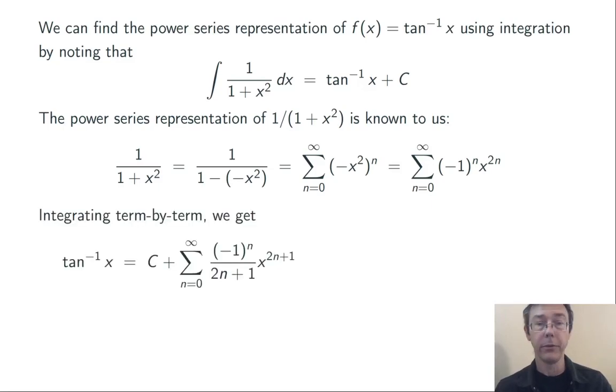Now let's integrate both sides, an indefinite integral. On the left-hand side, I just get the tan inverse of x. And on the right-hand side, I get sum from n equals 0 to infinity, negative 1 to the n, x to the 2n plus 1, adding 1 to the power, divided by 2n plus 1, dividing by that new power, plus c, the constant of integration.